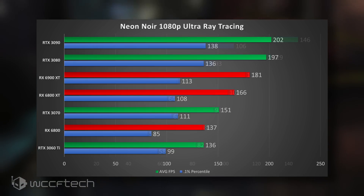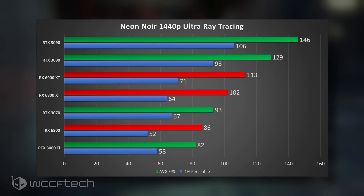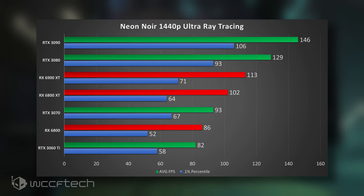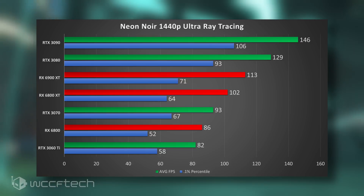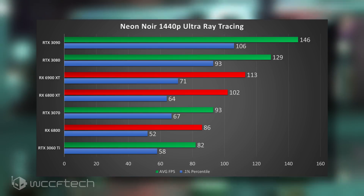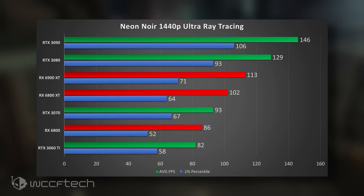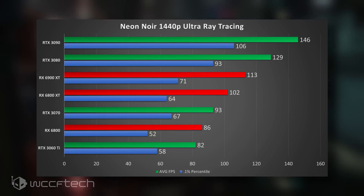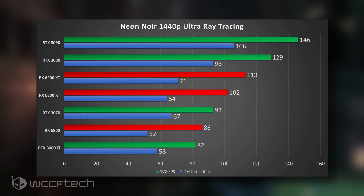Moving into 1440p, we see the gap between the 3090 and 3080 stretch out by a good bit — that's where you really start to see the separation. The lineup doesn't really shift overall. The 3060 Ti again falls behind the 6800 in average FPS but has much better 1% percentiles. The 3070 has closed the gap a little with the 6800 XT. Honestly all of these numbers are really high at 1440p.